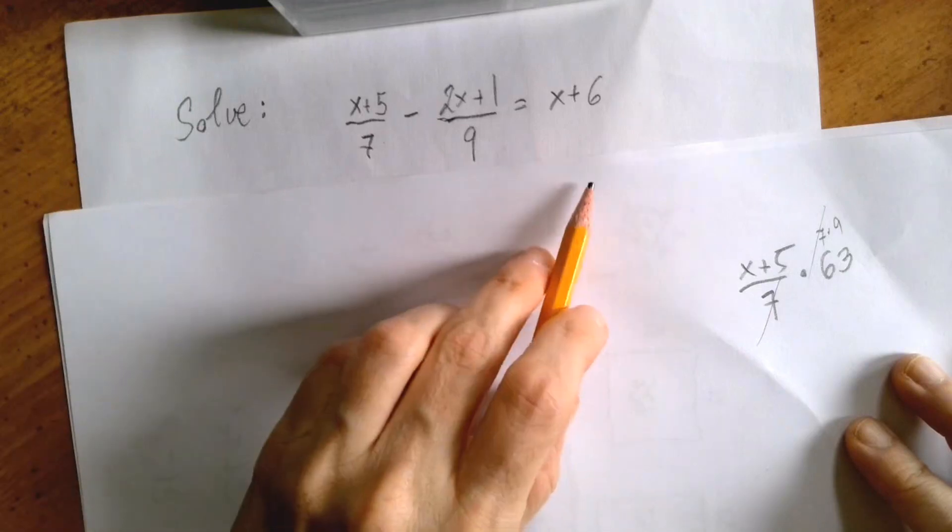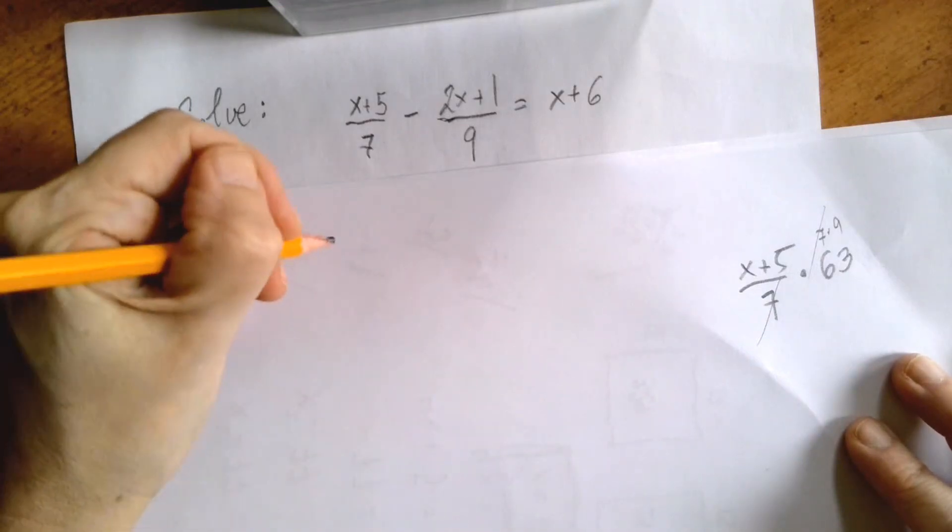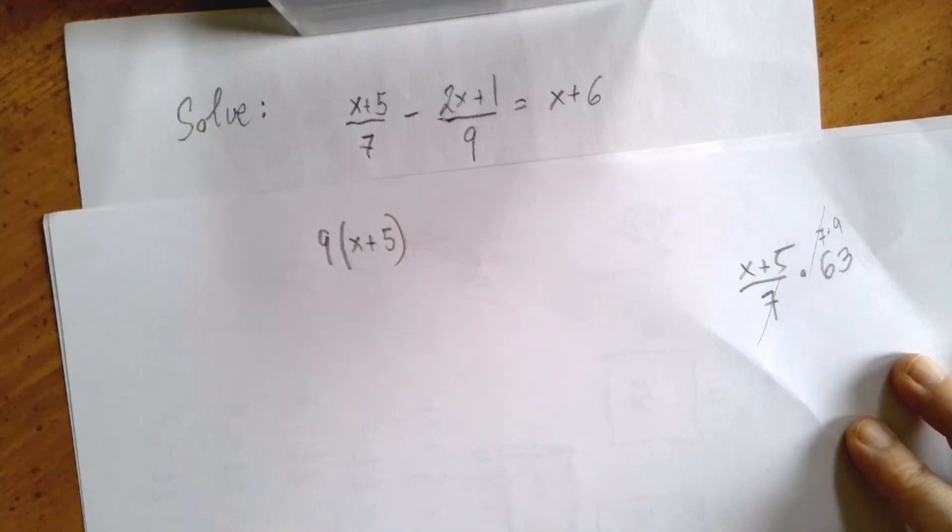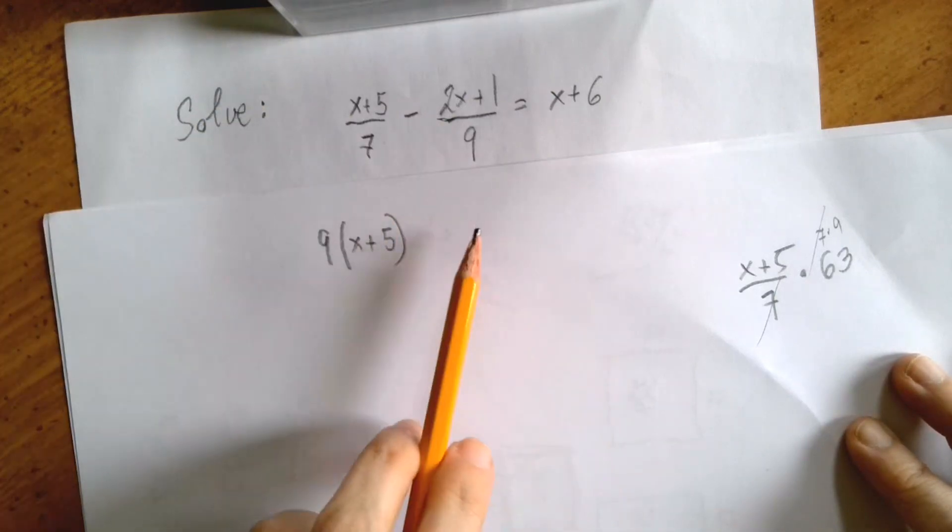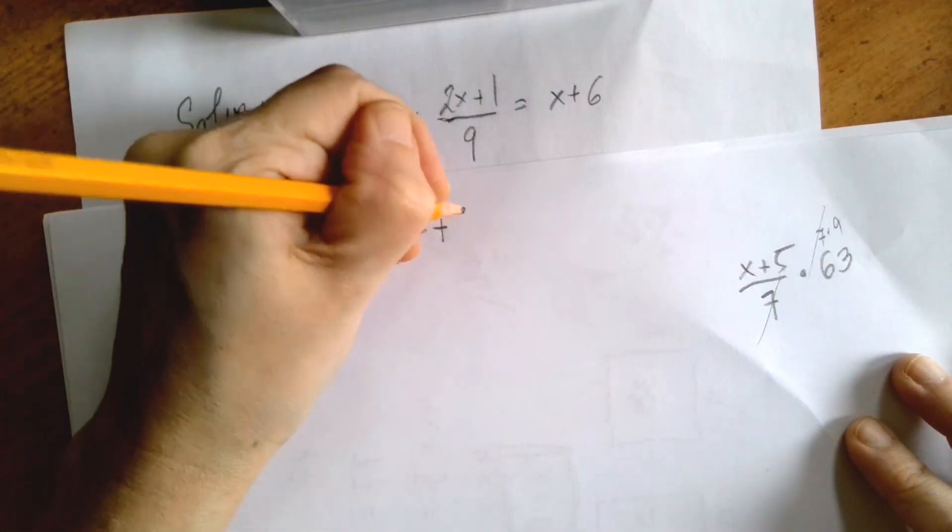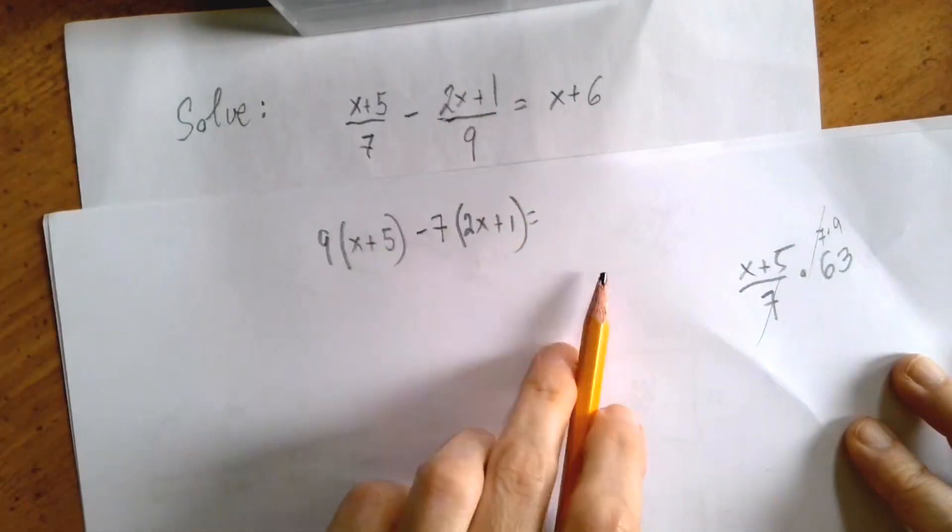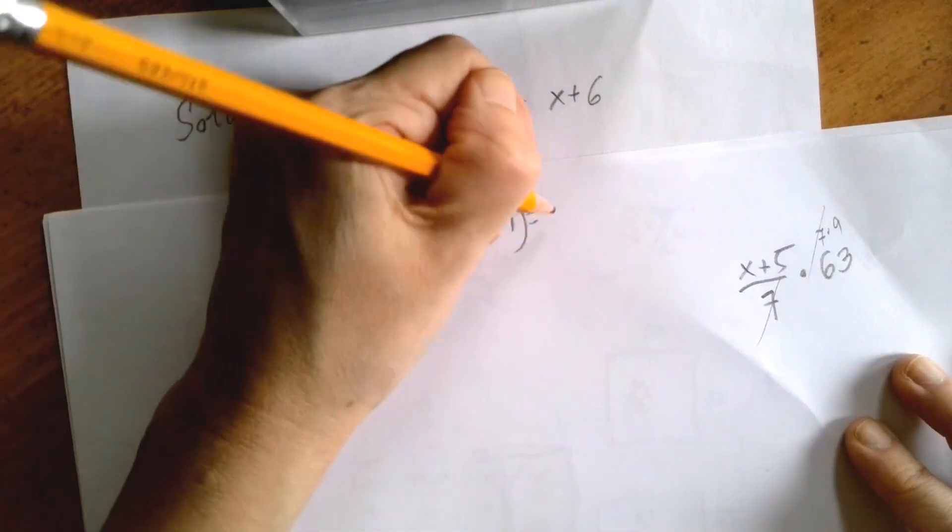So basically you're going to say, okay, we're multiplying by 63. Cancel out the 7. I still have 9 left. And the same way, multiply by 63. The 9 cancels out the 9 in 63. We get 7 left. And this, you just have to multiply the whole thing by 63.